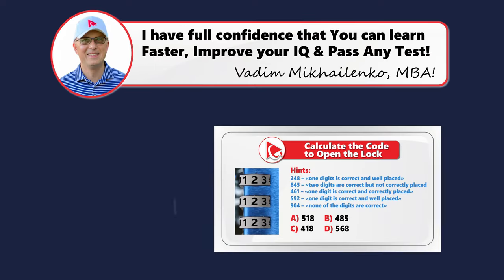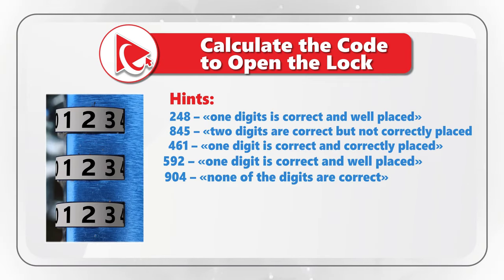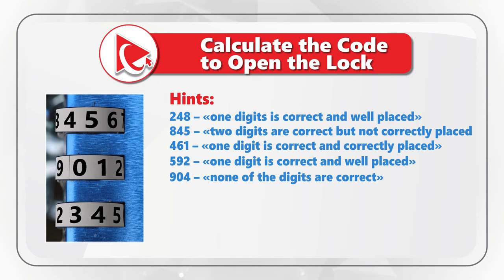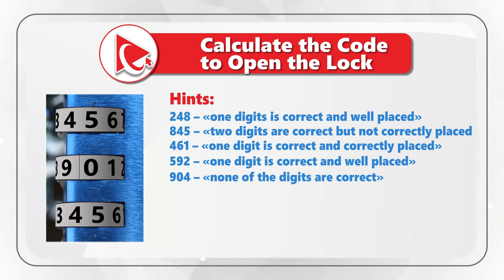Here is a challenging problem — by solving it you will boost your cognitive abilities. You are presented with 5 hints, and using these hints you need to unlock the code and open the lock. The hints are: in the digits 248, only one digit is correct and well placed. In the digits 845, two digits are correct but not correctly placed. In the digits 461, only one digit is correct and it is correctly placed. In the digits 592, only one digit is correct and it is well placed. And in the digits 904, none of the digits are correct.